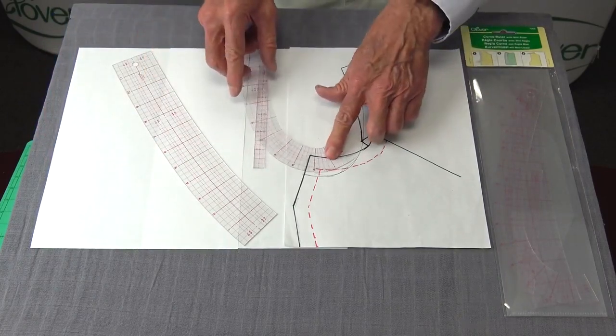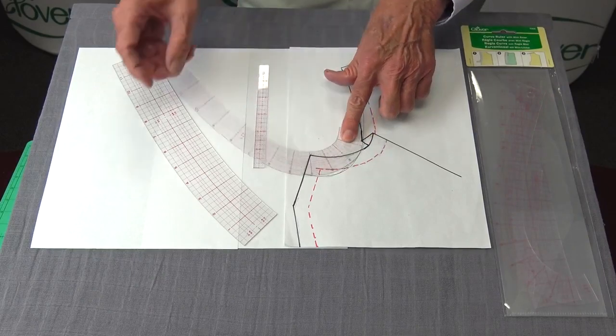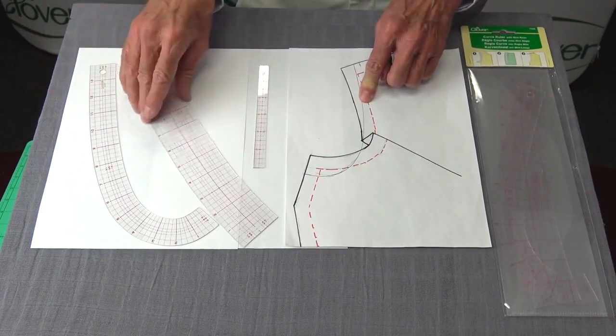She used the French curve, and you just overlay the French curve over the dots and fill in that section, and you just continue to follow it around until you have this line finished.